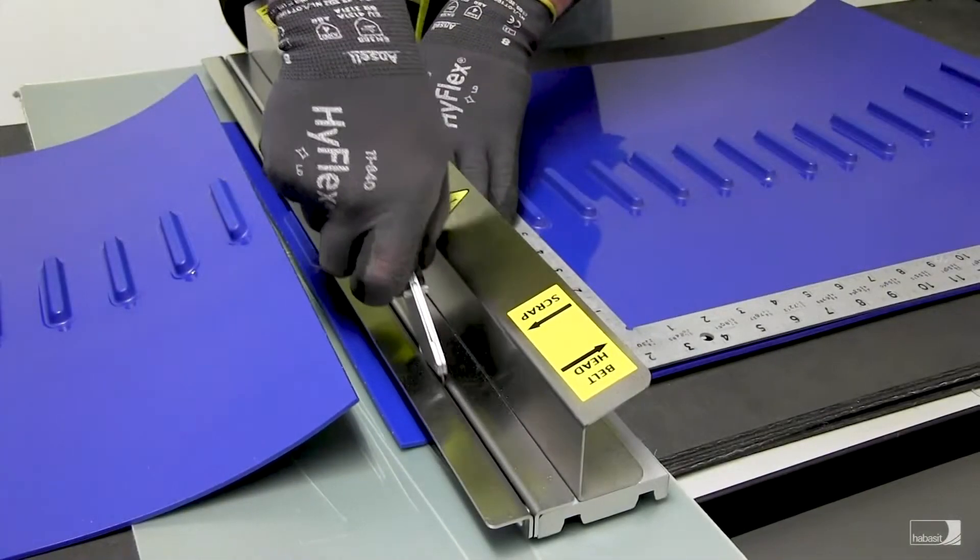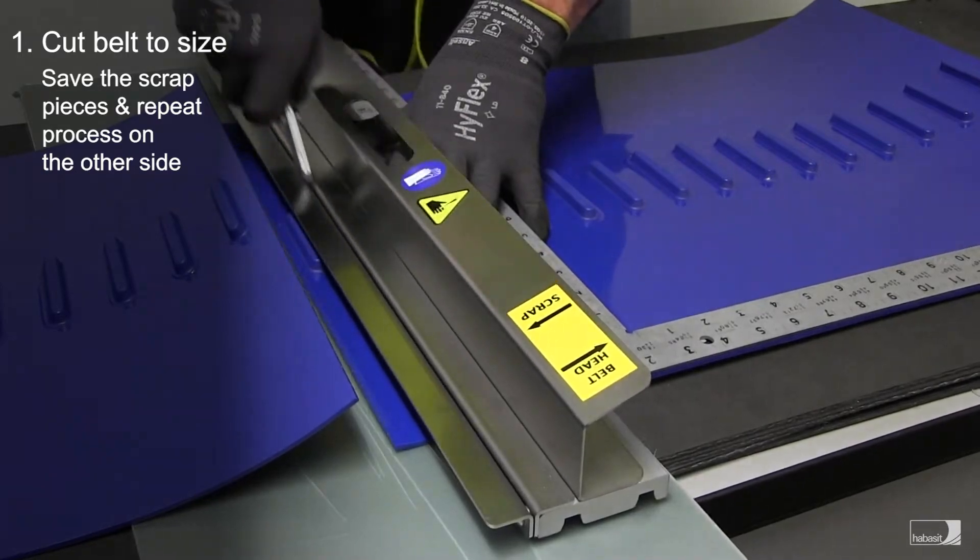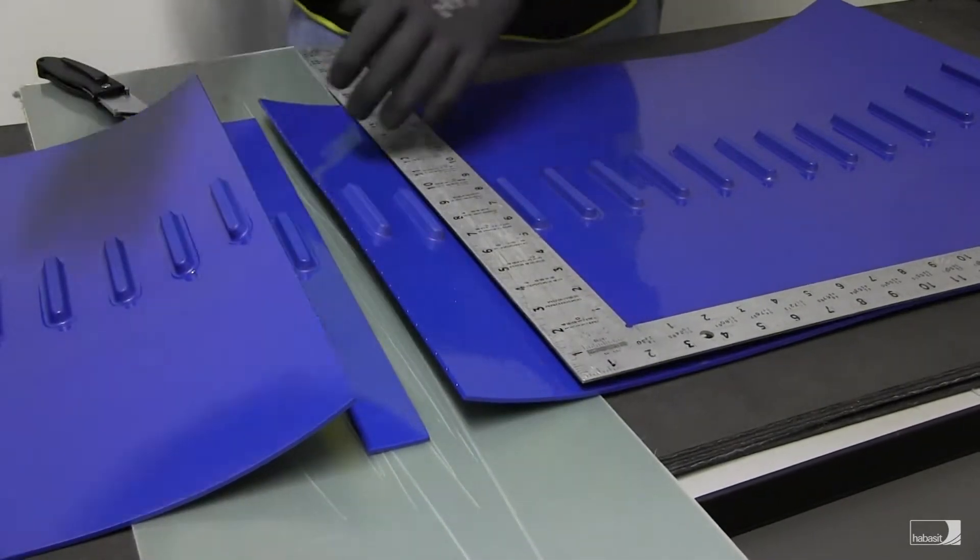Remove the scrap pieces however save them as they may be used for side pieces during the joining process. Repeat the process for the opposite belt end.